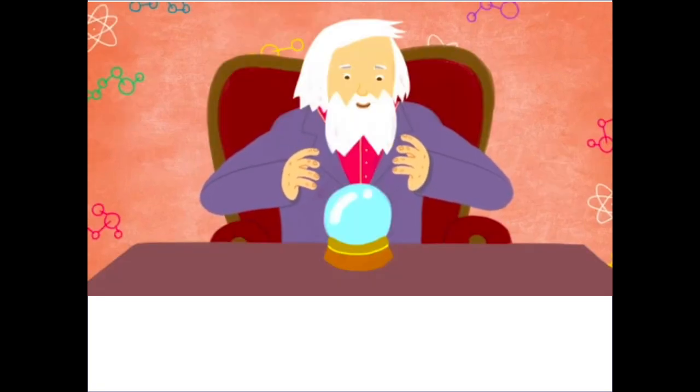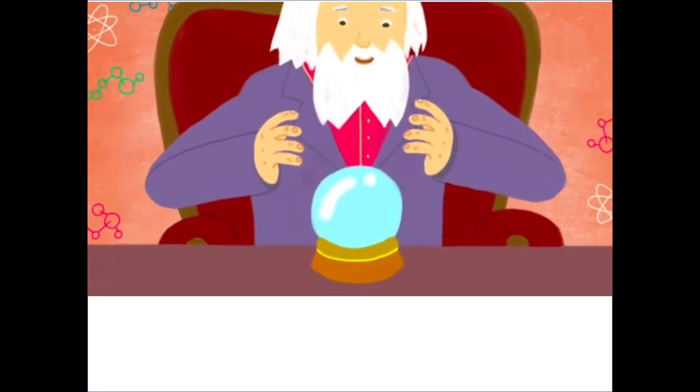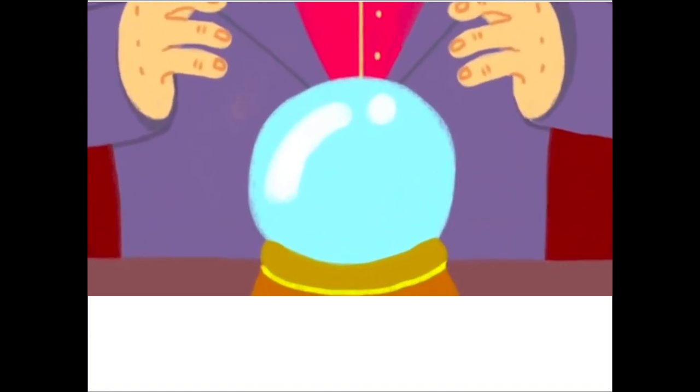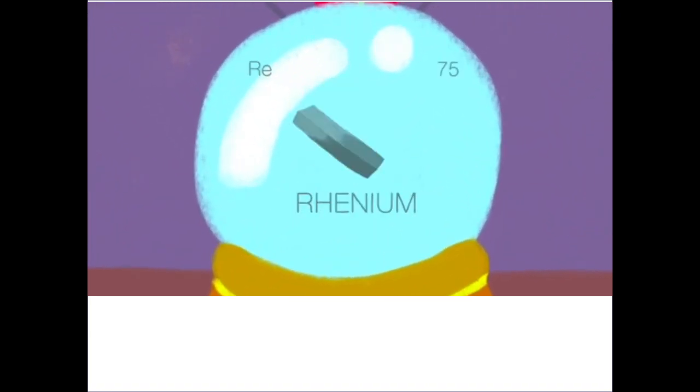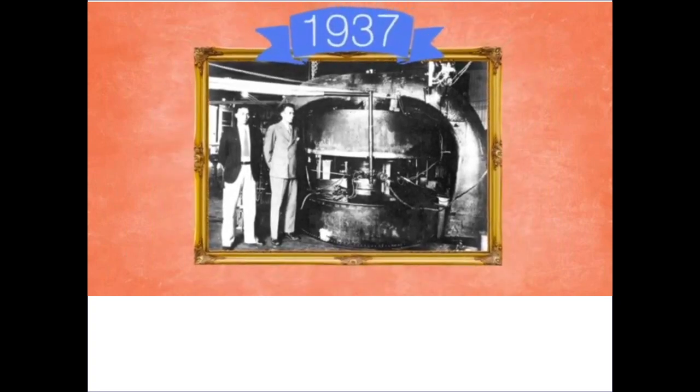Not only did Mendeleev completely nail gallium, he predicted other elements that were unknown at the time: scandium, germanium, rhenium. The element he called eka-manganese is now called technetium. Technetium is so rare it couldn't be isolated until it was synthesized in a cyclotron in 1937, almost 70 years after Dimitri predicted its existence, 30 years after he died.